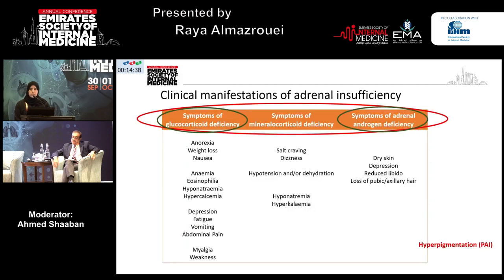The clinical manifestation of adrenal insufficiency really depends on which kind of steroids are deficient. In the case of patients with primary adrenal insufficiency, all three types of steroids will be lost, and therefore the patient will have a mix of these symptoms. Patients with secondary adrenal insufficiency will have only glucocorticoid and adrenal androgen deficiency. Remember that hyperpigmentation can only present in patients with primary adrenal insufficiency.